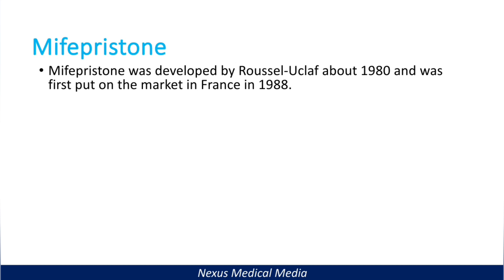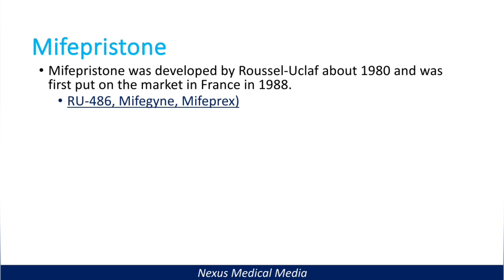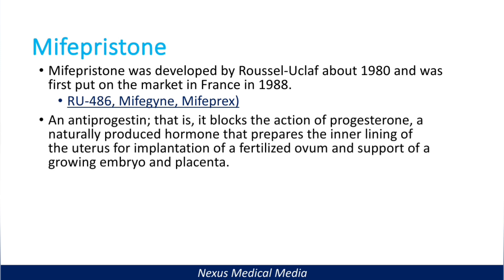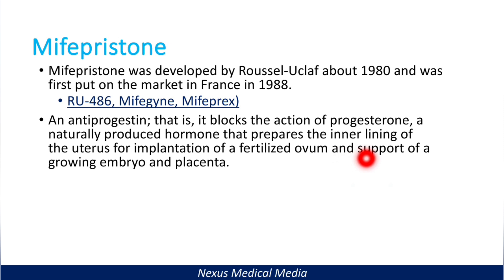Now let's talk about its counterpart, mifepristone. Mifepristone was developed by Russell Ullaff around 1980 and was first put on the market in France in 1988. Trade names include RU-486, Mifegyne, and Mifeprex. Mifepristone is an antiprogesterone, meaning it blocks the action of progesterone — the naturally produced hormone that prepares the inner lining of the uterus for implantation of a fertilized ovum and supports a growing embryo and placenta. This hormone maintains pregnancy.